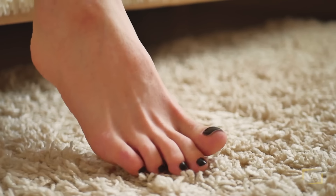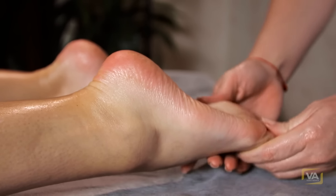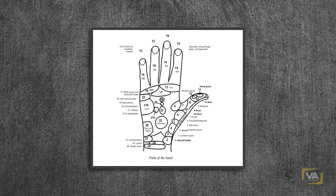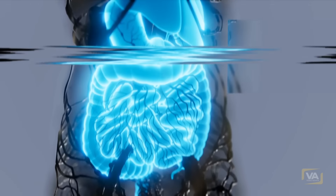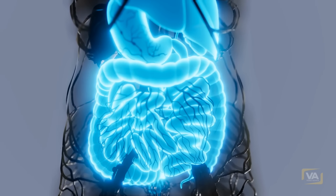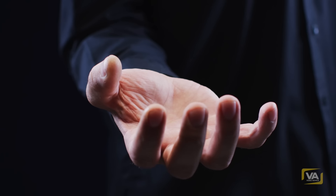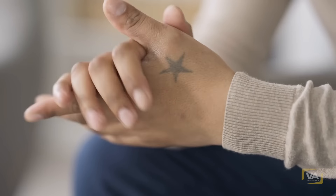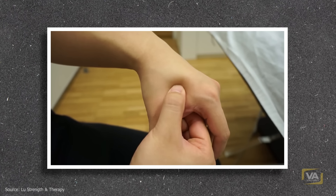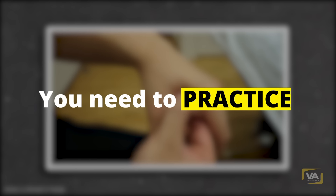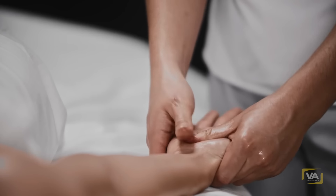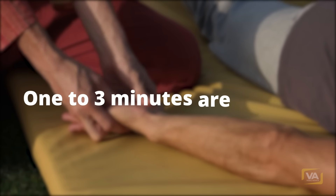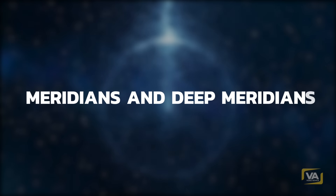Reflex zones: The hand reflex zones correspond to the foot reflex zones, the massage treatment of which is generally known today. Both illustrations show the reflex points or surfaces that are connected with the muscles and organs. Since some of the organs are only found on one side of the body, such as the heart and liver, this is reflected in the hands. Since hands come in different sizes, you may not find the exact pressure point immediately, but with some practice, even the non-expert can find the right spot. When you have found the desired point, massage it with your thumb using light pressure and slow circular movements. One to three minutes are enough.